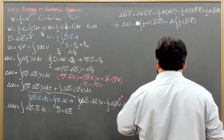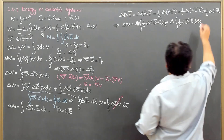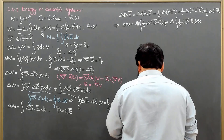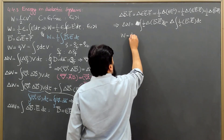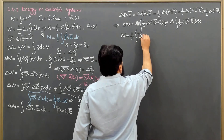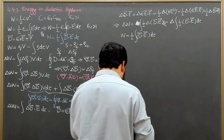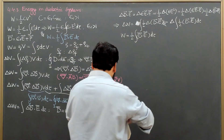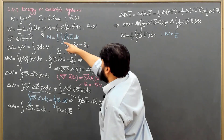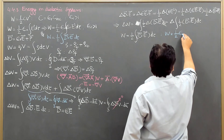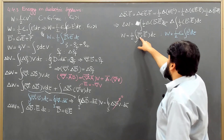The volume element dτ comes in, and if I write W now, then W = ∫(1/2)(D·E)dτ. So I have converted the expression from W = ∫(1/2)ε₀E²dτ to W = ∫(1/2)(D·E)dτ.